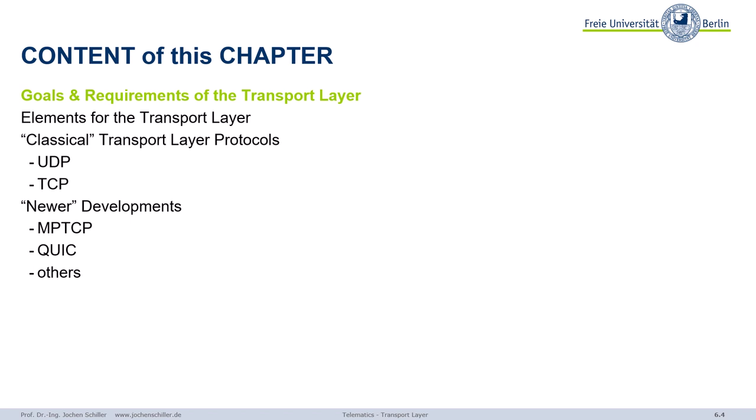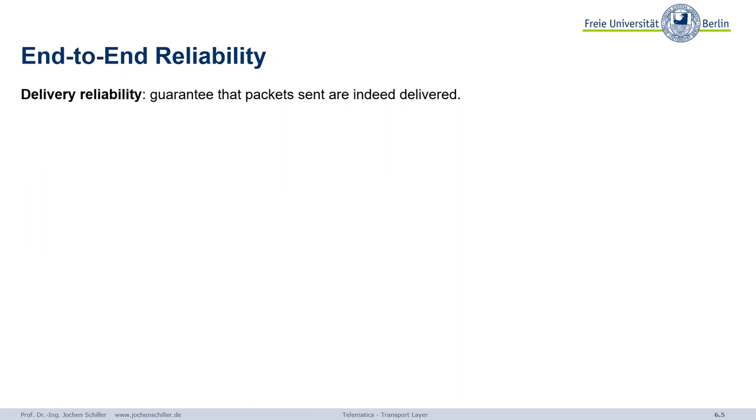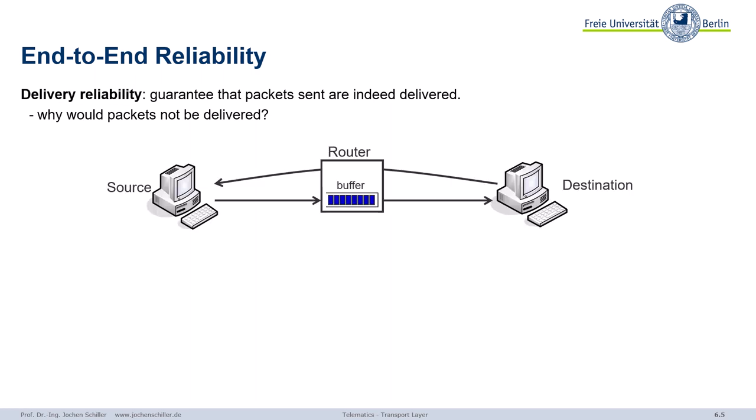The most prominent goal is reliability — end-to-end reliability. Remember, the network layer in the internet doesn't guarantee anything. But now we want to guarantee that packets sent are really delivered. Why might they not be delivered? We have all these links and routers, and maybe too much traffic causes buffer overflows. What do routers do? They drop packets, maybe return ICMP messages, maybe not. If there's overload, all you can do is drop packets.